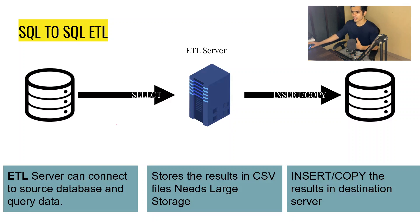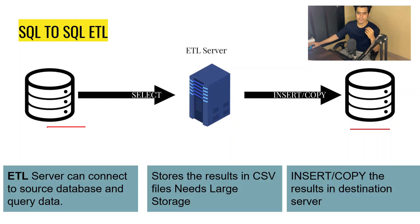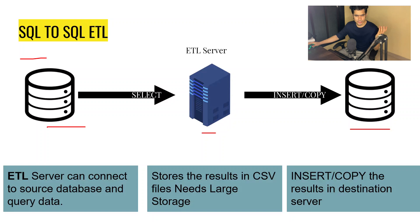So we have one database server over here — let's say this is the relational database — and this is our Redshift or data warehouse. Between them we have an ETL server, which can be any machine. This ETL server will basically connect to our relational database.